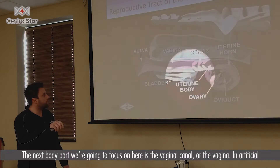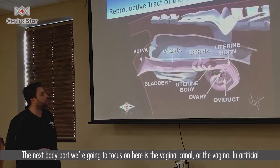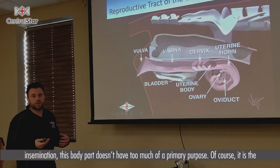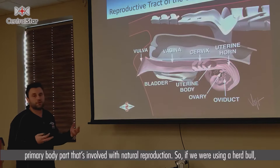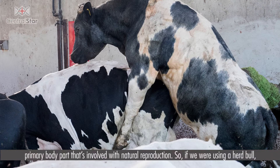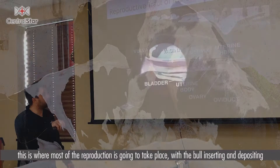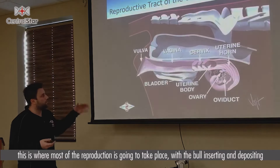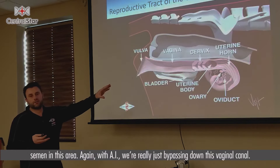The next body part we're going to focus on is the vaginal canal or the vagina. In artificial insemination, this body part doesn't have too much of a primary purpose. Of course it is the primary body part involved with natural reproduction — if we were using a herd bull, this is where most of the reproduction is going to take place, with the bull inserting and depositing semen in this area. With AI we're really just bypassing down this vaginal canal.